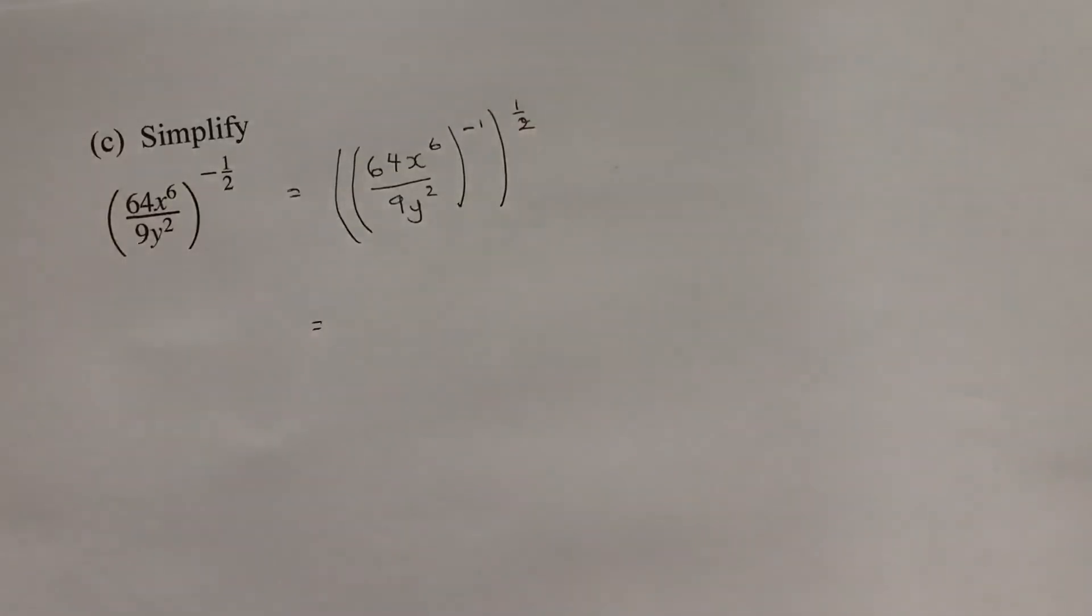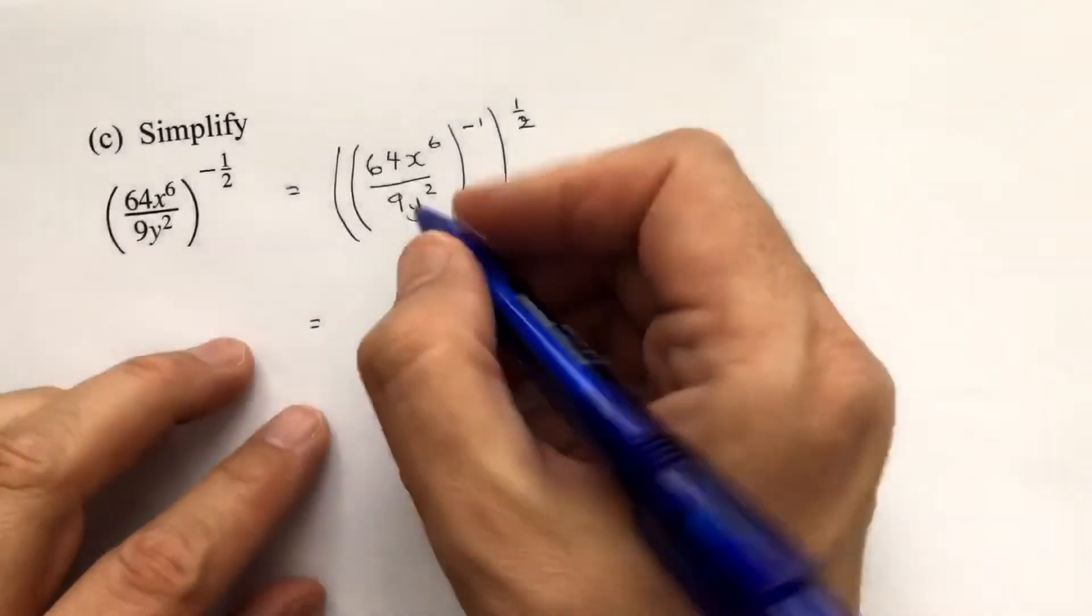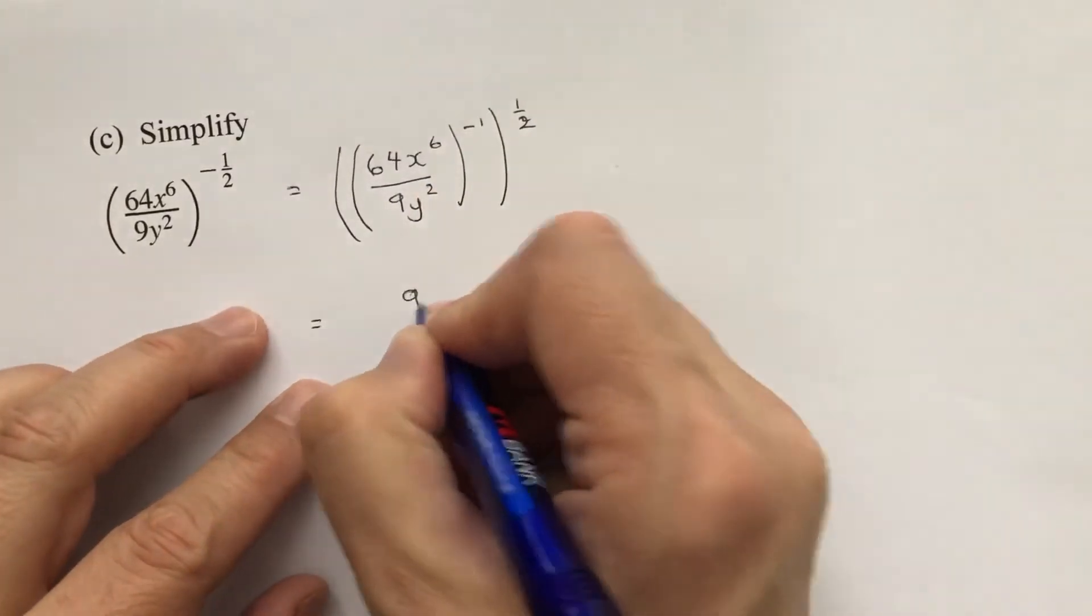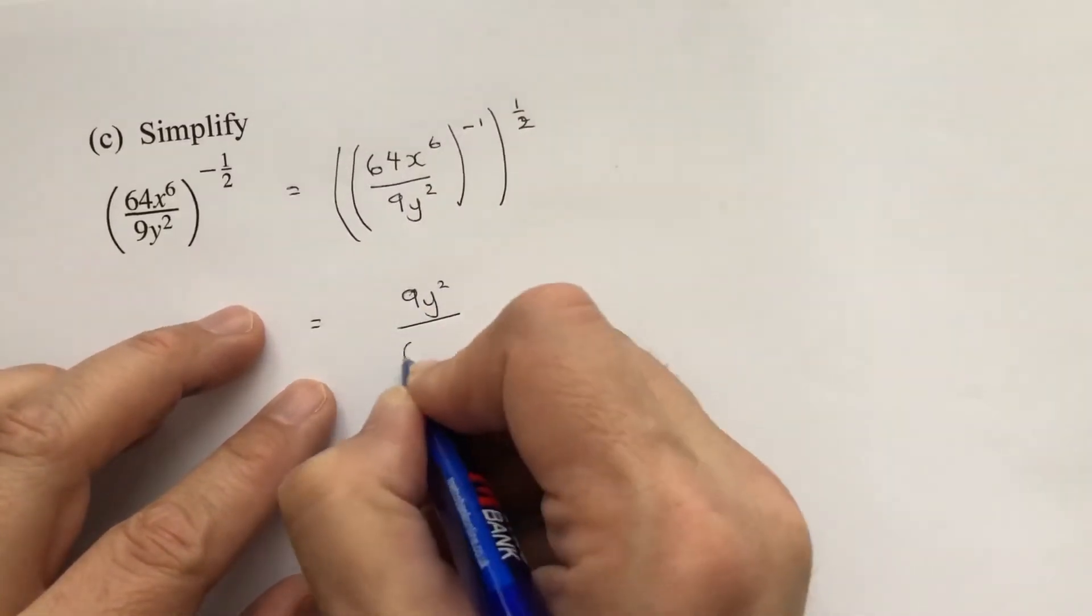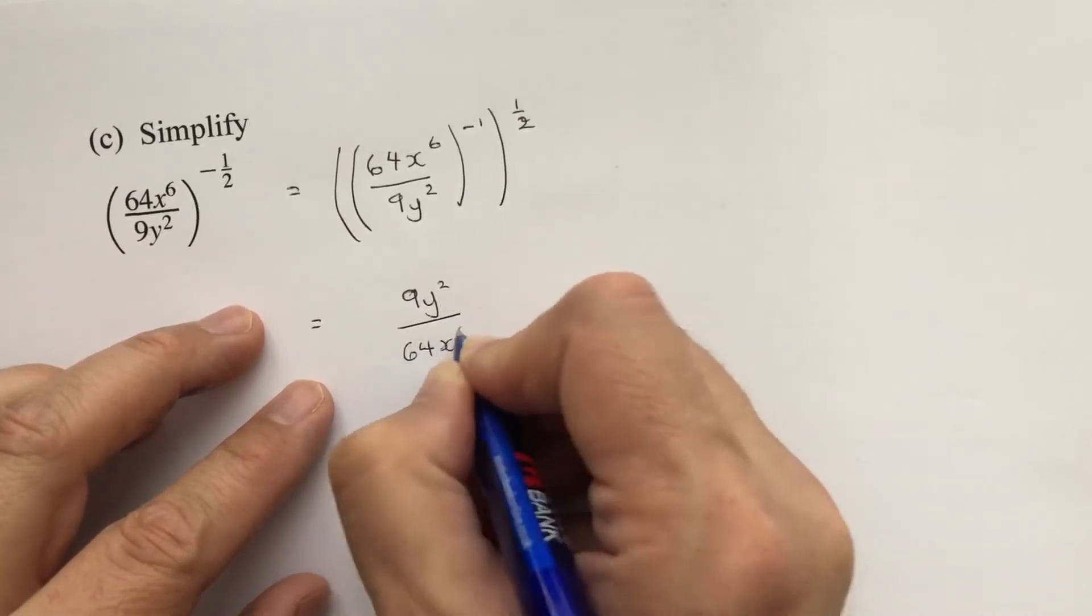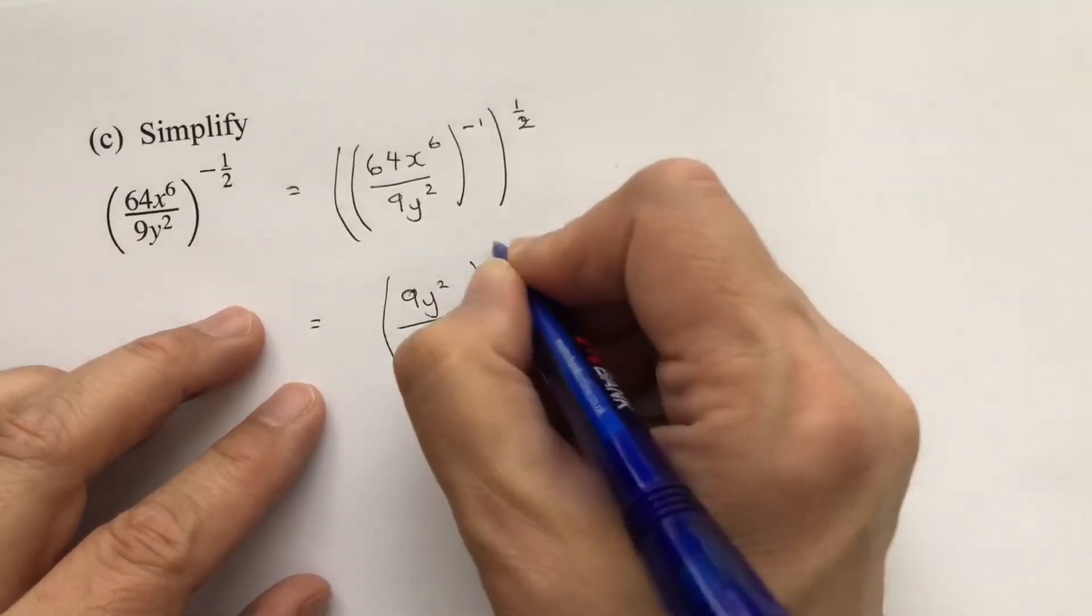So negative 1 reciprocates the fraction, so it just puts the 9y squared on the top and the 64x to the power of 6 on the bottom, to the power of a half.